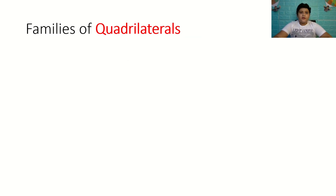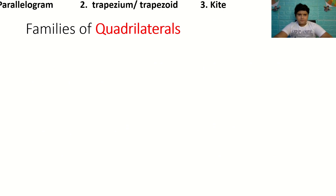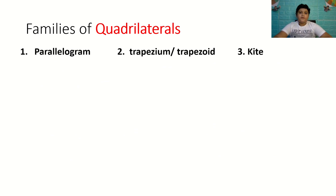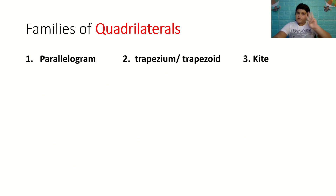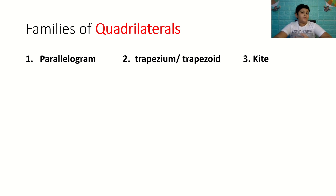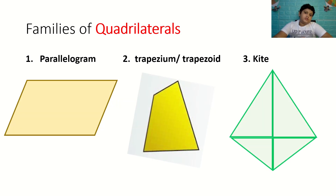Next, the families of quadrilaterals. There are three families of quadrilaterals. Number one: parallelogram. Number two: trapezoid. And number three: kite. These are how they look like.